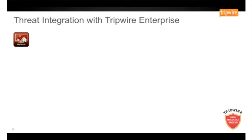We are now going to demonstrate how Tripwire Enterprise can integrate with cloud-based threat intelligence providers. In this demonstration, we are going to conduct each step manually so you can see the process Tripwire Enterprise takes to validate potential threats. It's important to note this whole process can be fully automated. In the demo, we are going to introduce the environment and then download some live malware onto a Windows 7 endpoint. Please note, this demonstration has been conducted in an isolated environment and Tripwire do not recommend you try this at home.